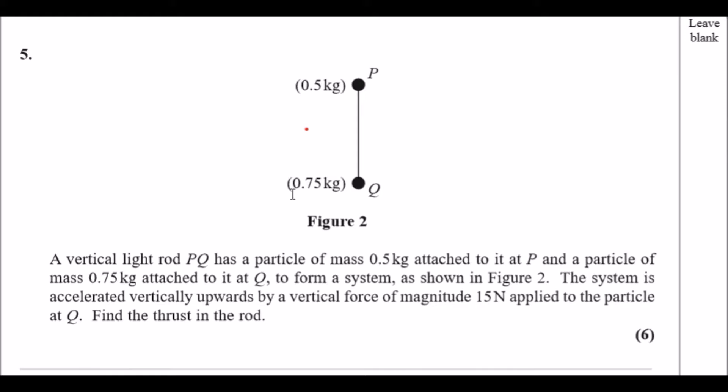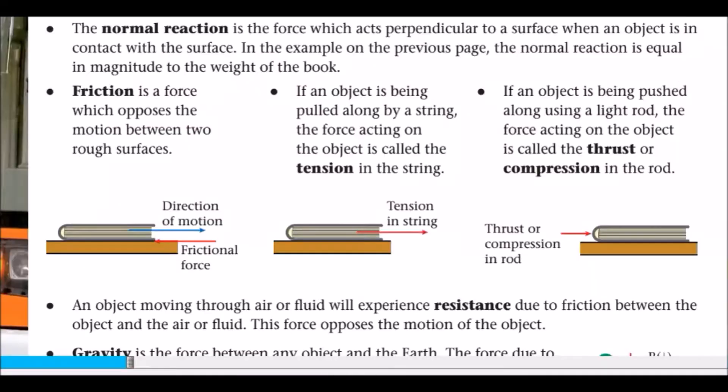Tension is basically when it's pulled away, so we follow the direction of the string, whereas thrust in the rod is when the rod itself compresses. And to understand the visual demonstration, I'm going to post a screen of information from the standard M1 textbook that you probably get in school.